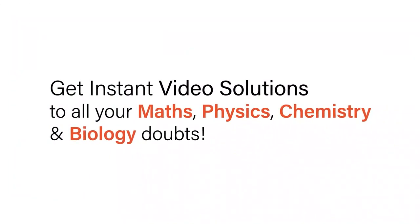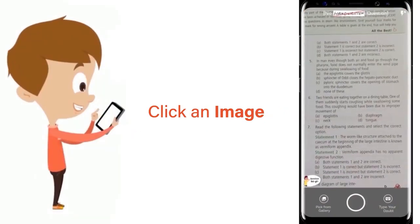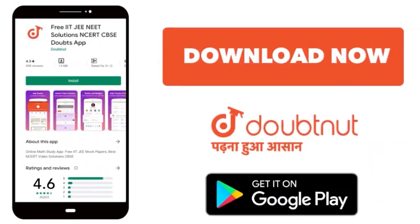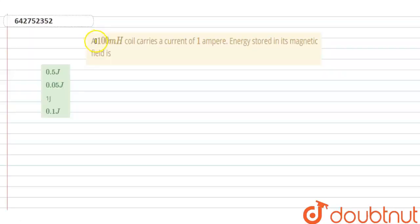With Doubtnet, get instant video solutions to all your math, physics, chemistry, and biology doubts. Just click the image of the question, crop it, and get an instant video solution. Download Doubtnet app today. Hello everyone, our question is: A 100 millihenry coil carries a current of 1 ampere. Find the energy stored in the magnetic field.